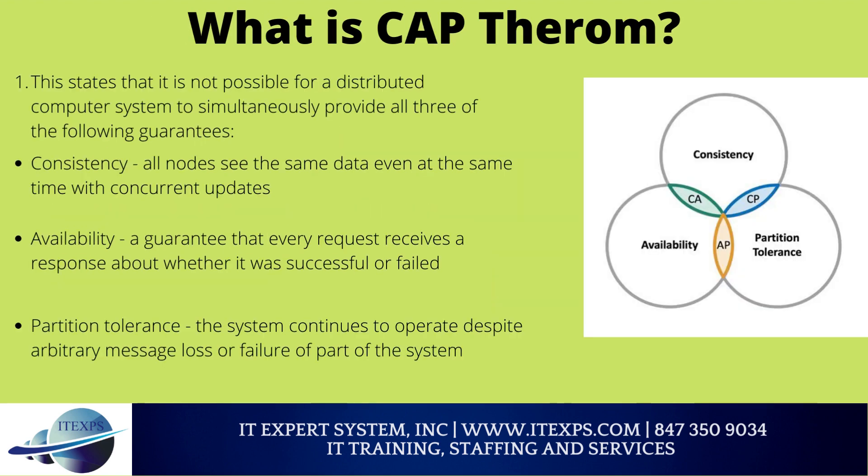What is CAP theorem? This states that it is not possible for a distributed computer system to simultaneously provide all three of the following guarantees: Consistency — all nodes see the same data even at the same time with concurrent updates. Availability — a guarantee that every request receives a response about whether it was successful or failed. Partition tolerance — the system continues to operate despite arbitrary message loss or failure of part of the system.